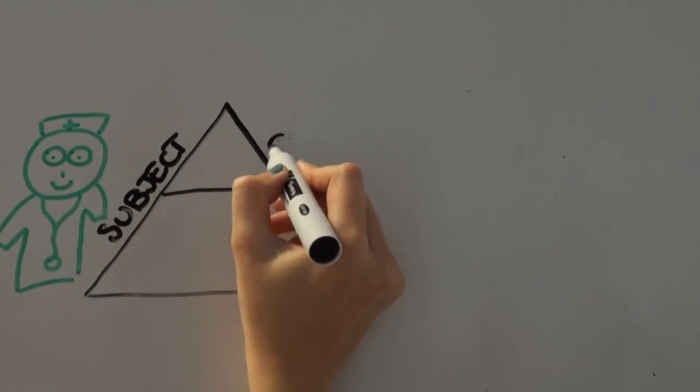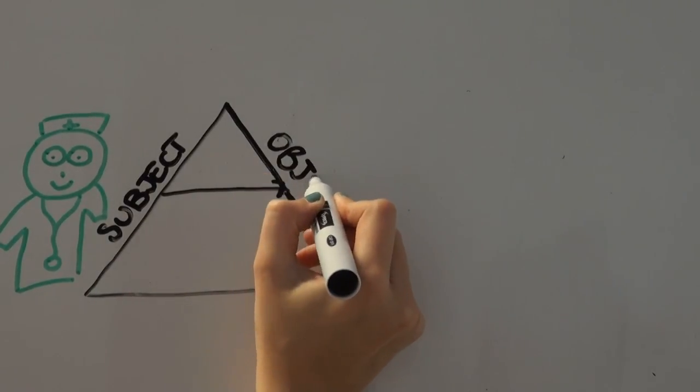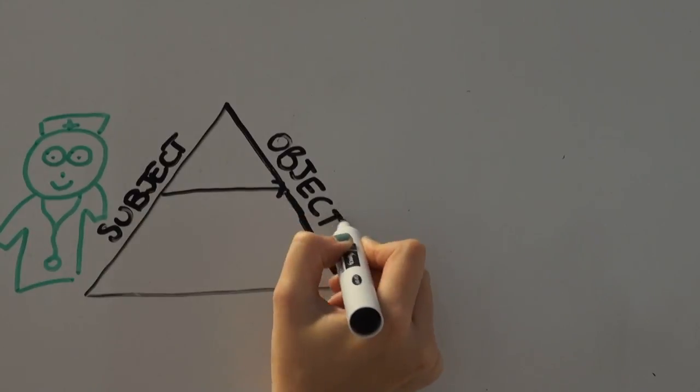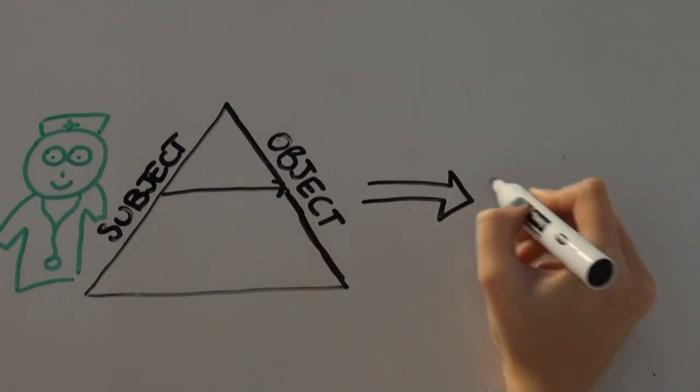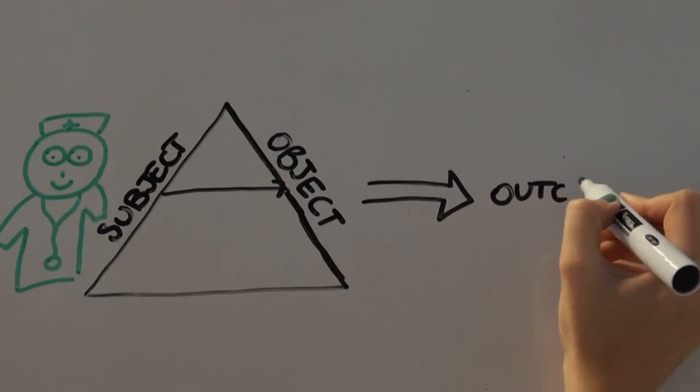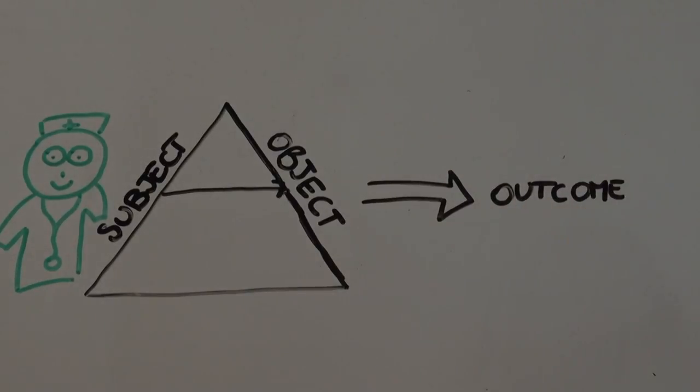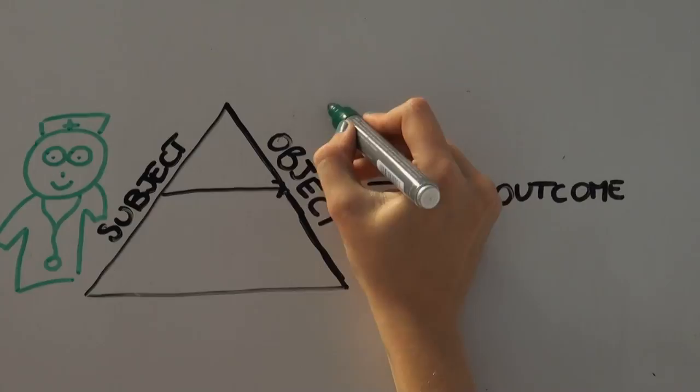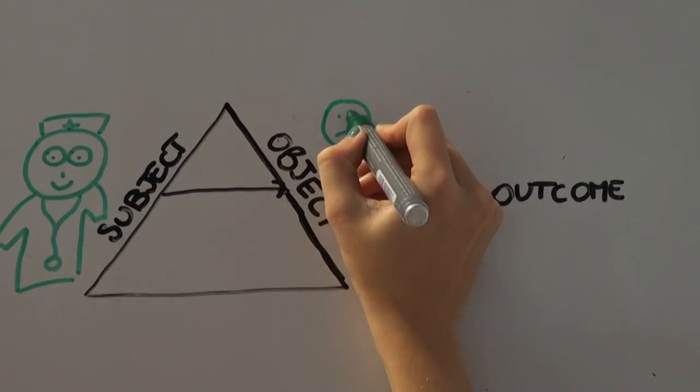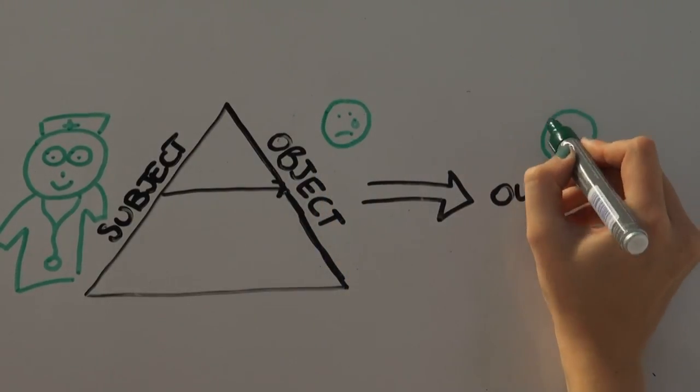In the activity system, the subject works towards the object of a system. This object is the raw material or problem space at which the activity is directed and which is transformed into outcomes. In the case of our neurologist, the objects are the patients and their illnesses. The outcomes of this activity will be to cure them or to improve their health.